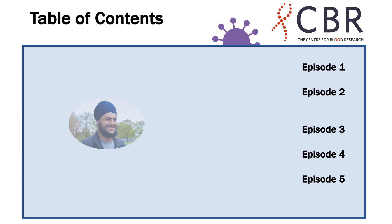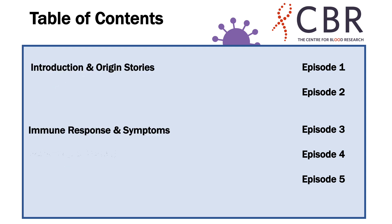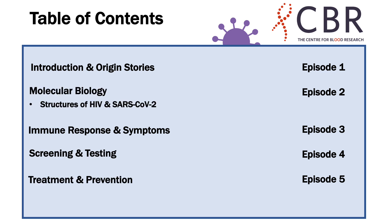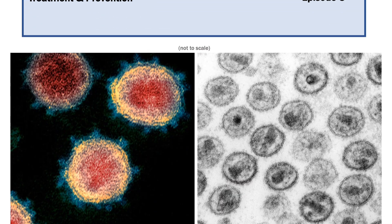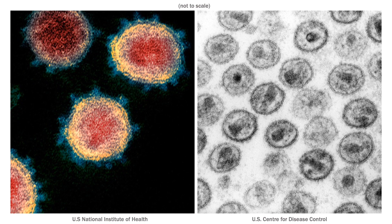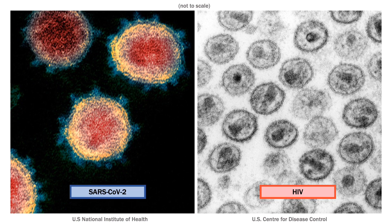This is Mithaab, and this is episode 2 of a 5-part series sponsored by the CBR. What we have here are actual images of both SARS-CoV-2 and HIV. Last episode we mentioned how the word corona means crown in Latin, and in the image on the left you can actually see the little spikes on the virus which resemble a crown. For the rest of the episode we'll focus a little more on structures like these spikes and give some more detail on their functions.